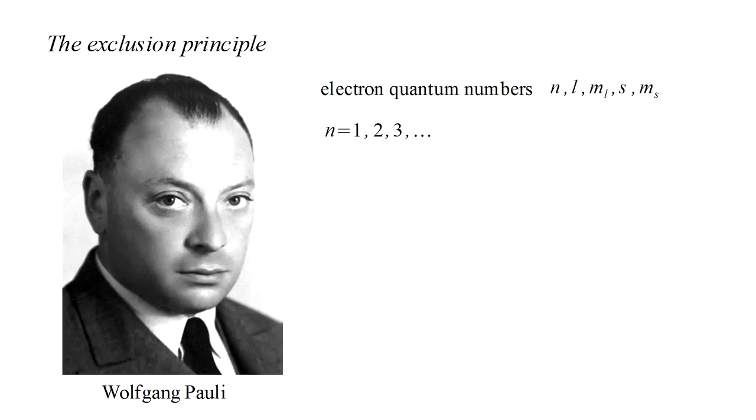n can have values one, two, three, et cetera, and specifies energy. l can have values zero, one, two, up to n minus one, and specifies angular momentum magnitude. m sub l can have values of minus l, minus l plus one, and so on, up to l, and specifies the z component of angular momentum.